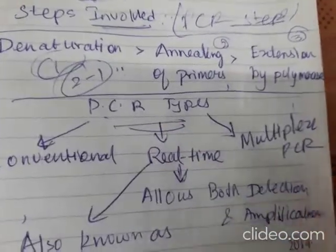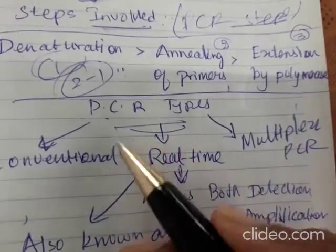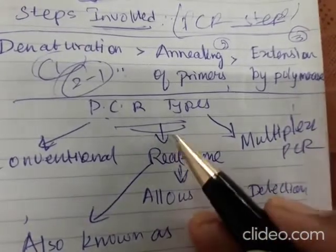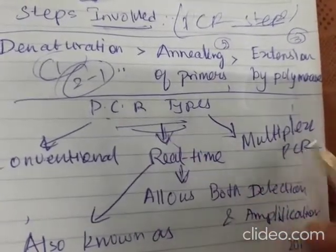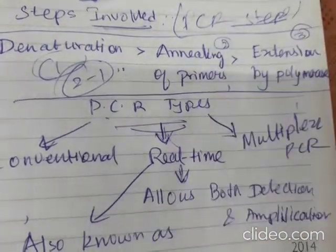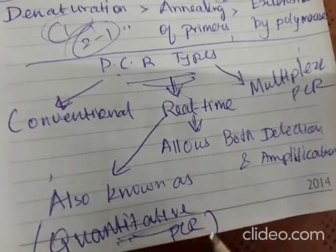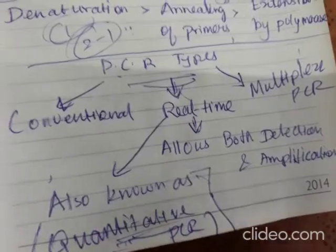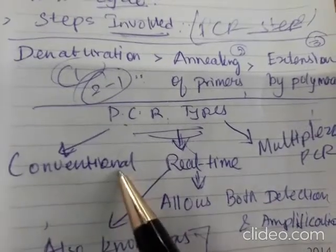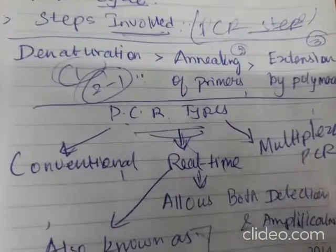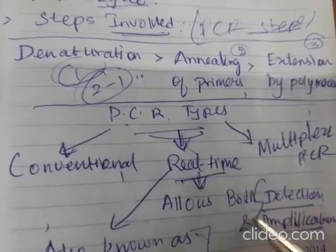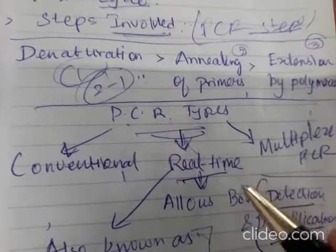The types of PCR include: conventional PCR, real-time PCR (RT-PCR), and multiplex PCR. RT-PCR is a quantitative PCR. RT-PCR allows both detection and amplification simultaneously.